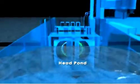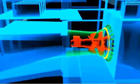Once the head pond reaches the right level, wicket gates open, allowing the water to flow through the turbine.